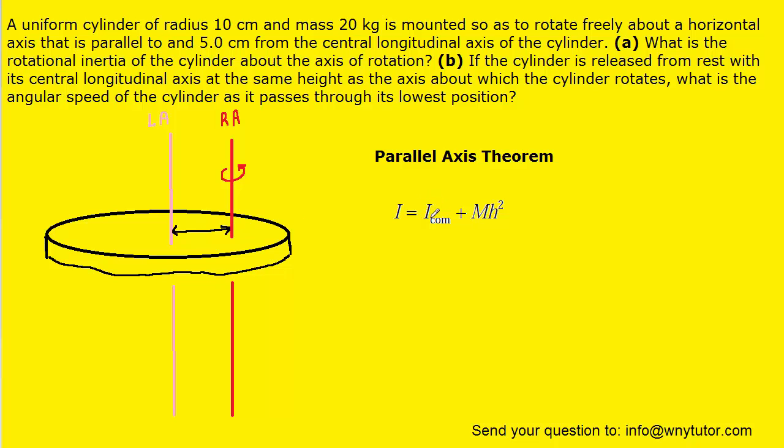Now the I_COM, or the rotational inertia about the center of mass, that needs to be looked up in a table of formulas for a uniform cylinder. There should be a table like that in your textbook. And if you look up the I_COM for a cylinder, you should get the following expression: one half times the mass of the cylinder times its radius squared. And then again, we're going to be adding that to the term mh squared.